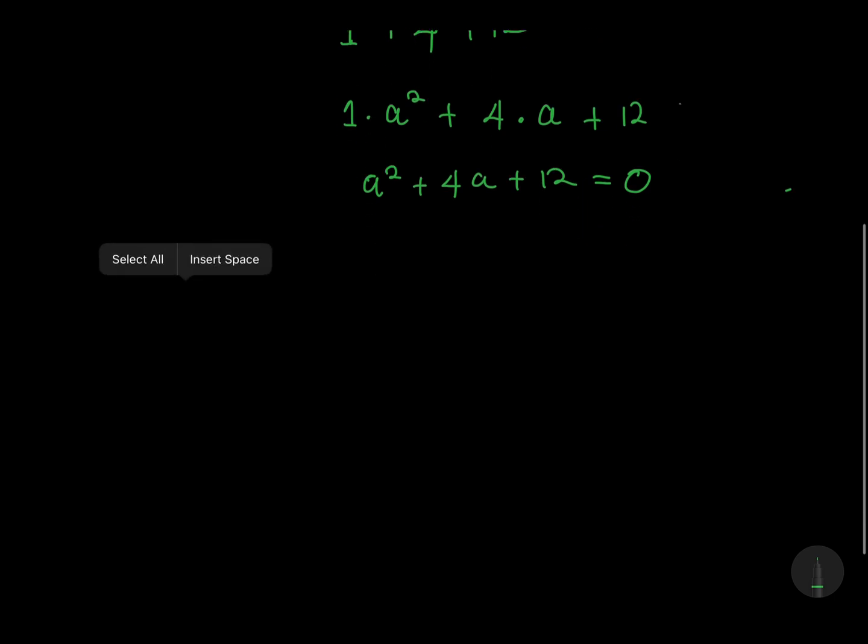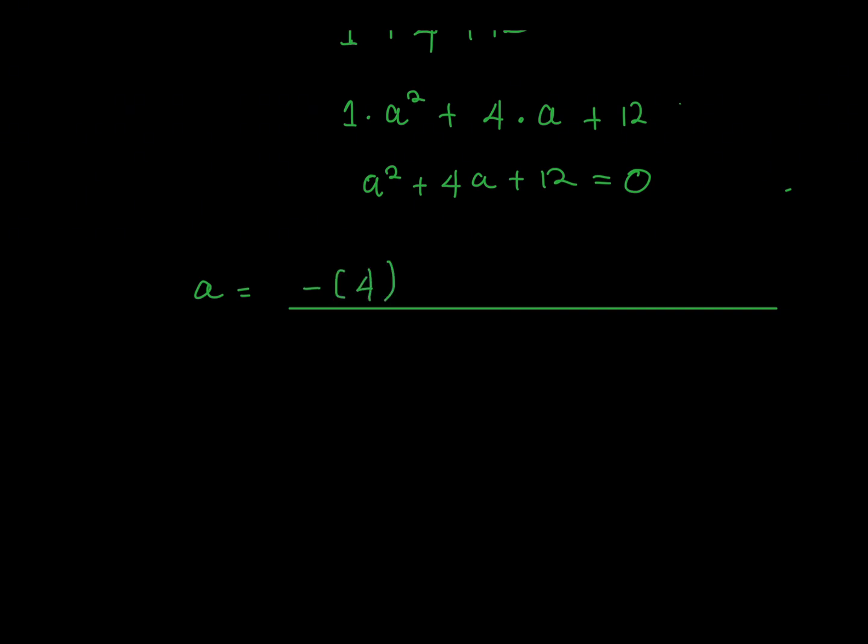I'm going to factorize this using a quadratic formula. a = (-b ± √(b² - 4ac))/(2a). Notice that a is equal to 1, b is equal to 4, and c is equal to 12.